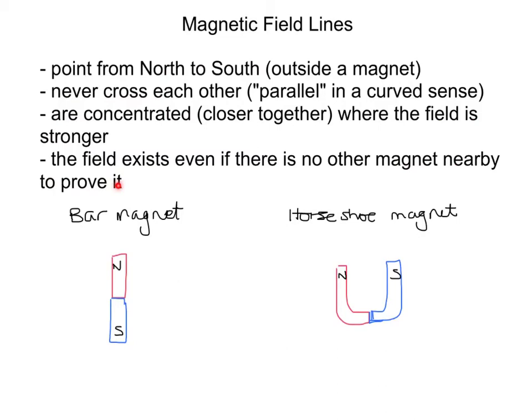So I'm going to draw a couple of examples here. We know that we have to go from north to south outside the magnet. So these field lines are going to come out of the north end and into the south, so my arrow goes that way.